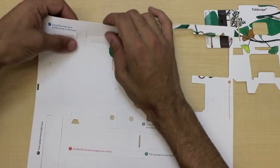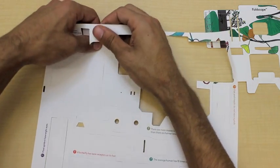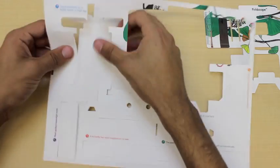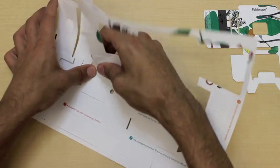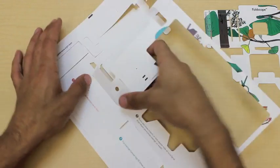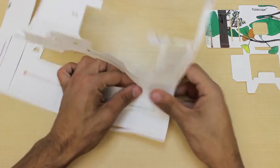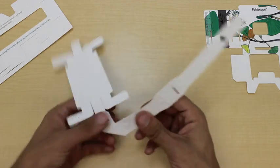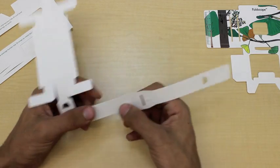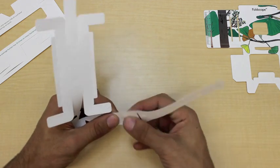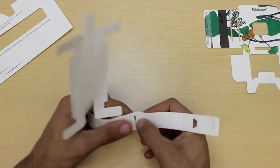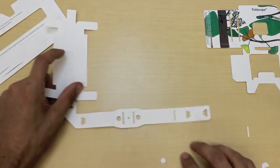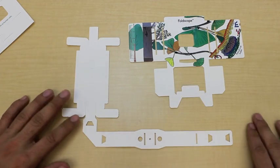Let's also cut out the lens stage. It's a large piece shaped like an L. Once it's cut out, you can discard the small pieces in the middle. And there you have it. These are our first two pieces.